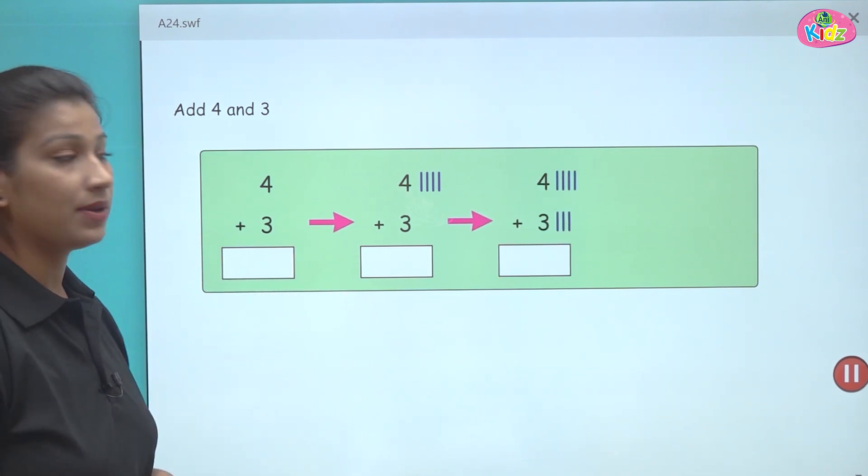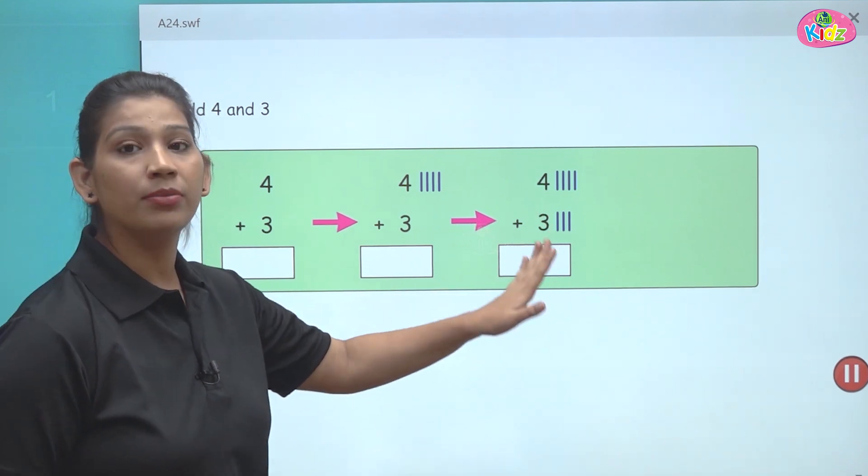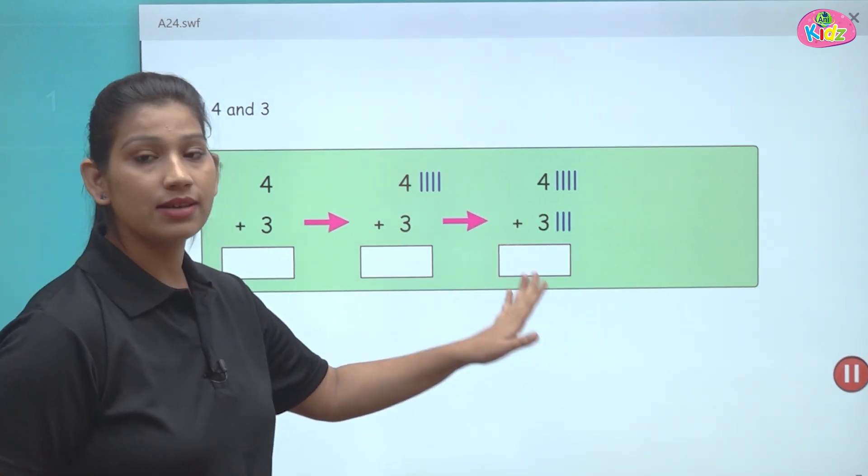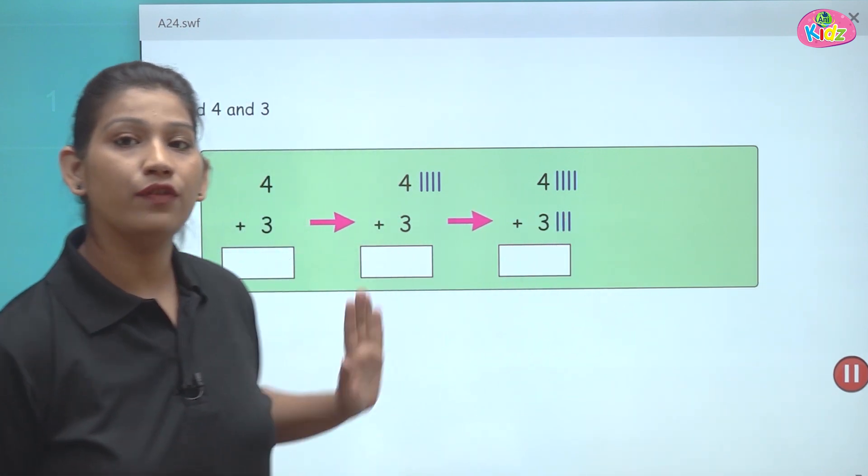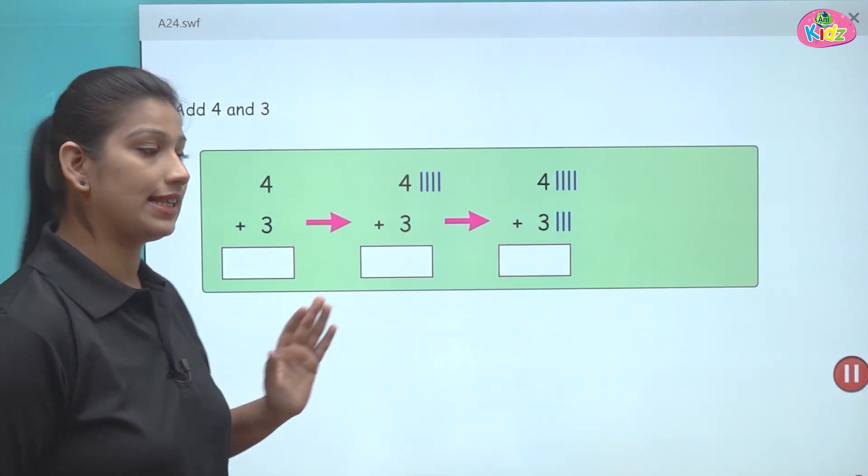Our next step is to draw the next lines which is for number three. Aap three hai next number to ham three lines count kareinge. Three lines draw kareinge. One, two, three. Hamne pehle four lines draw karee, phir hamne three lines draw karee.